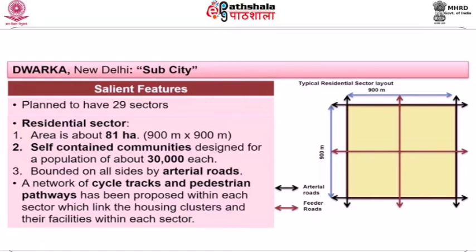The salient features of the plan: it had 29 sectors, with a typical residential sector layout of approximately 900 by 900 meters — an area of about 81 hectares. These sectors were self-contained, designed for a population of 30,000 each. The sectors were bounded on all sides by arterial roads, with a network of cycle tracks and pedestrian paths within each sector linking housing clusters and their facilities.